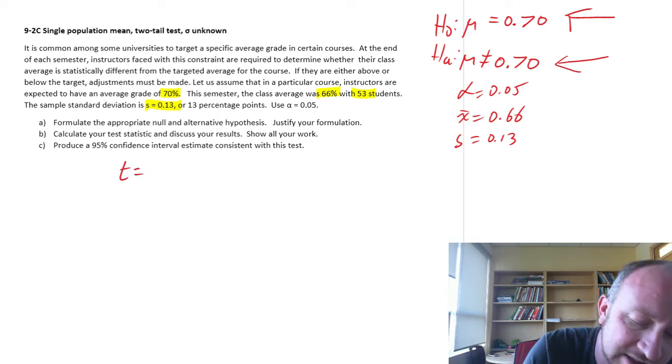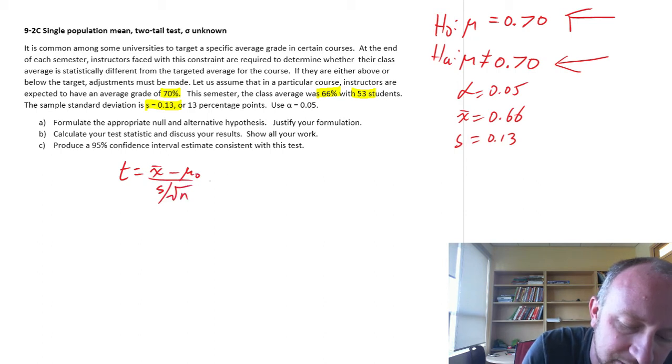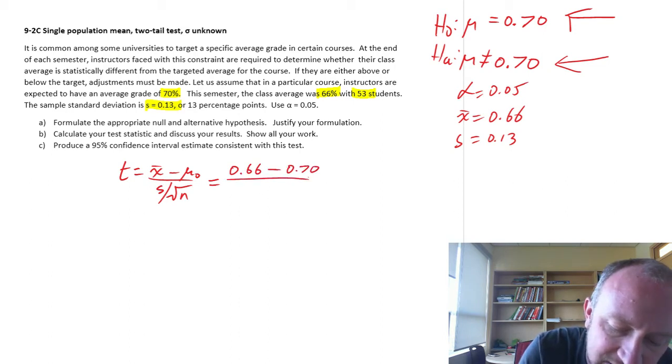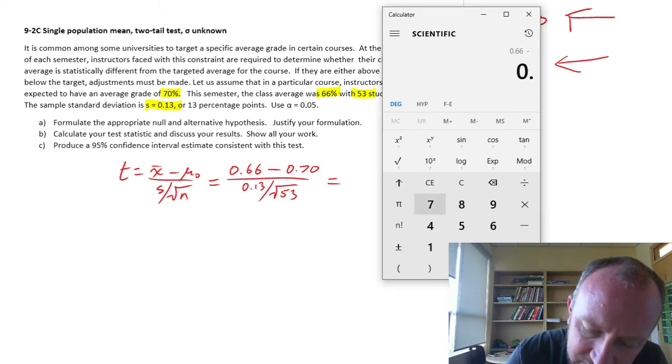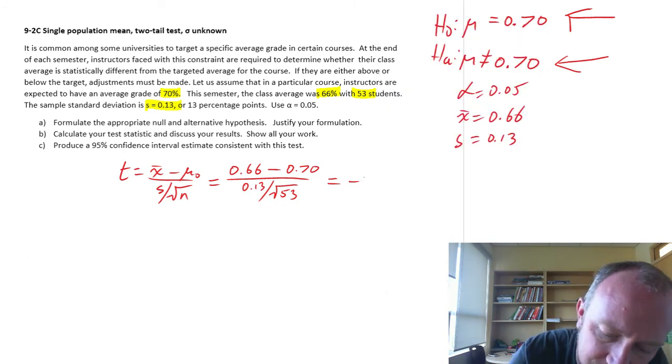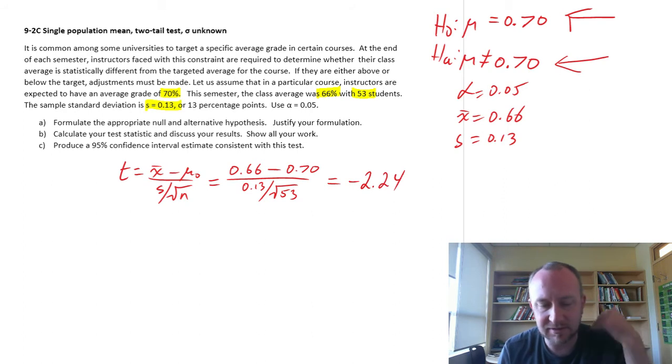So here the next step, calculate your test statistic: x-bar minus mu over s root n. So our sample mean was 0.66. Our hypothesized value is 0.70 divided by standard deviation over sample size, whereas my sample size was 53 students. And here we go, 0.66 minus 0.7 divided by 0.13 over root 53 equals negative 2.24. Okay, so there's my test statistic.